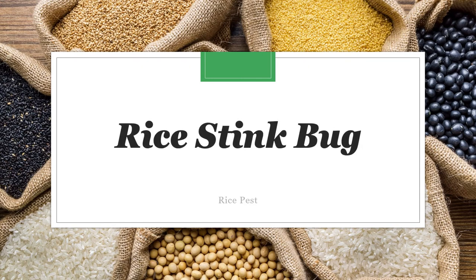The rice stink bug, scientific name Oebalus pugnax, is a flying insect and a member of the order Hemiptera. It's been a known agricultural pest in the United States since as early as 1775 and is a known pest on rice in Louisiana.